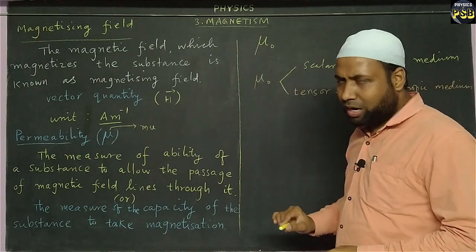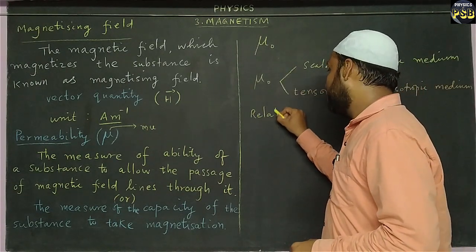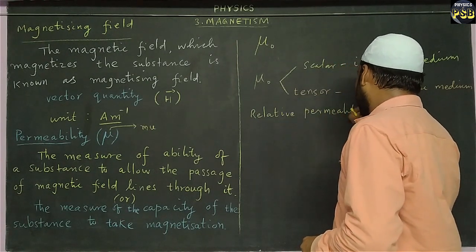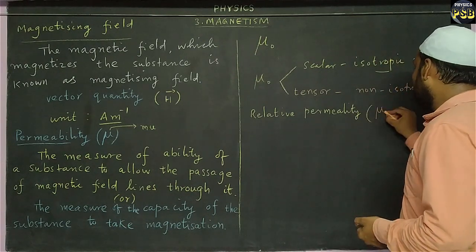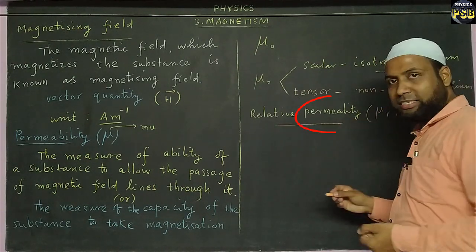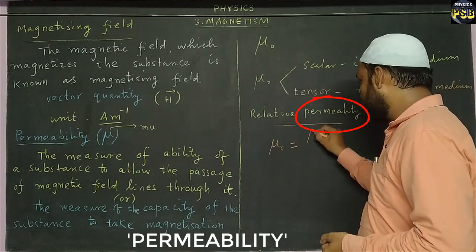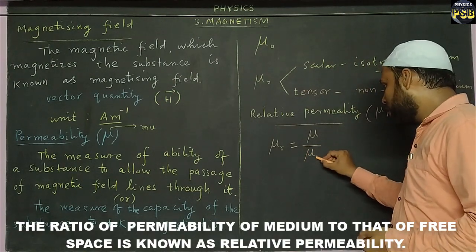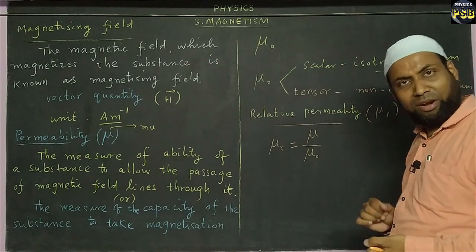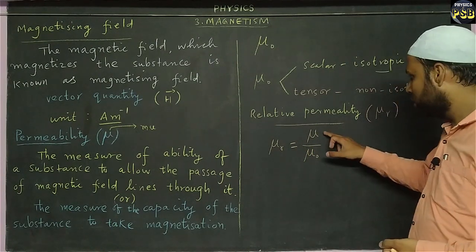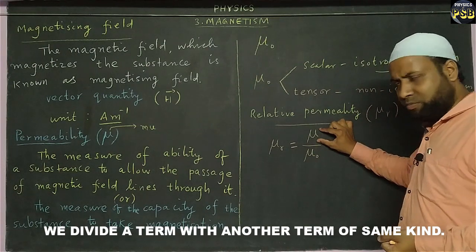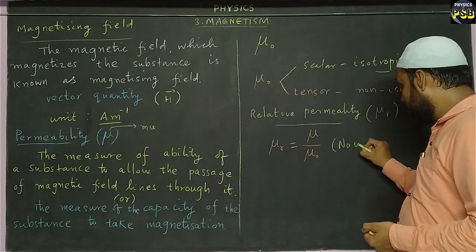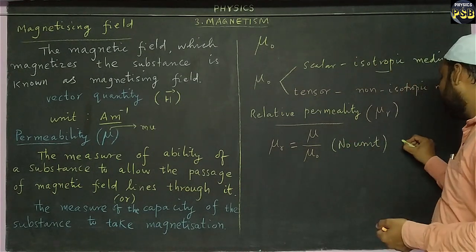Now there is one thing called relative permeability. Relative permeability is denoted by the letter mu-r. It is defined as the ratio of the permeability of the medium to the permeability of free space. It is a dimensionless quantity — because we are dividing the same type of term by another, it has no unit.